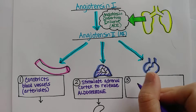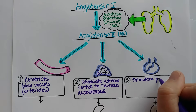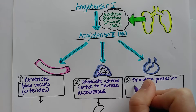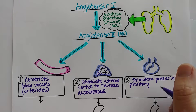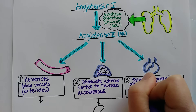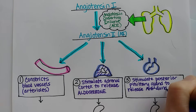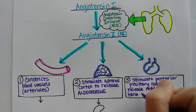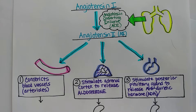The third thing angiotensin 2 is going to do is stimulate the posterior pituitary gland up in the brain to release a hormone called antidiuretic hormone. Antidiuretic means it's going to make you urinate less — instead of being a diuretic, it's an antidiuretic. We call this ADH, but you should also know that clinically it is usually called vasopressin.